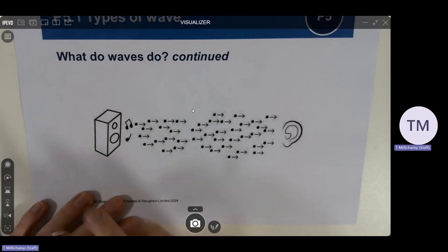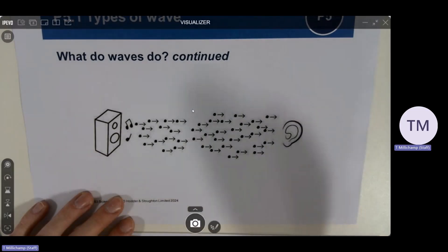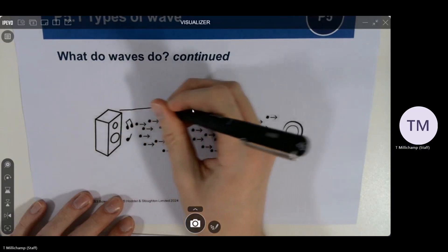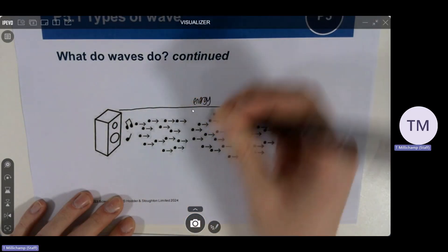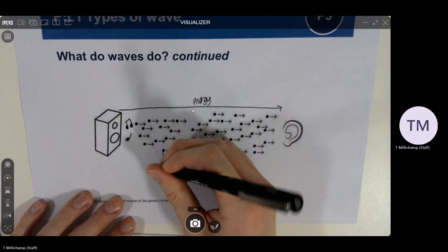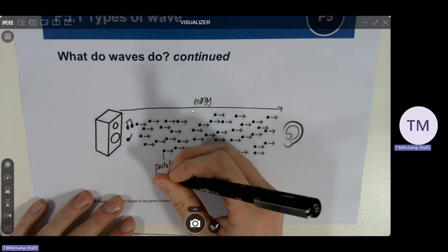So we've said that sound is a wave that is transferring energy. Now we might think that the reason that energy gets from here all the way over to here is that the particles in the air are transferring that energy themselves.